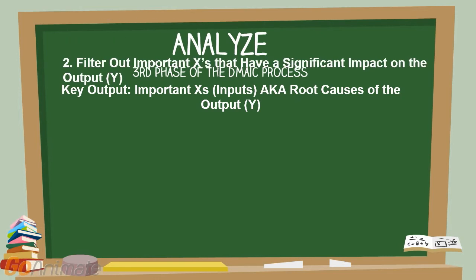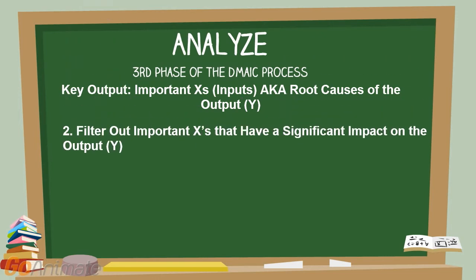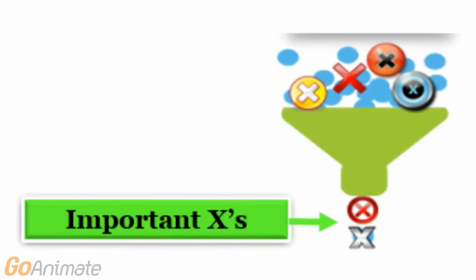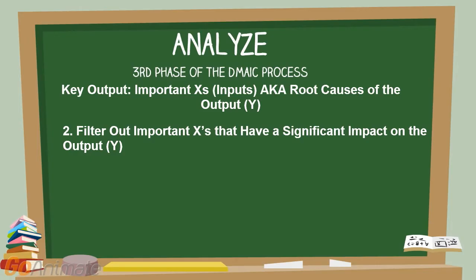Step 2: Filter out important Xs that have a significant impact on the output Y. Use statistical analysis tools to filter out important Xs — those inputs that have a significant impact on the output Y — from unimportant Xs that have zero or little impact on Y.